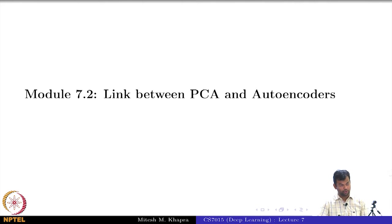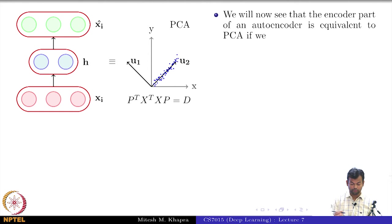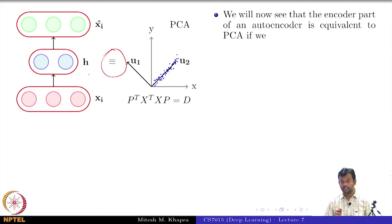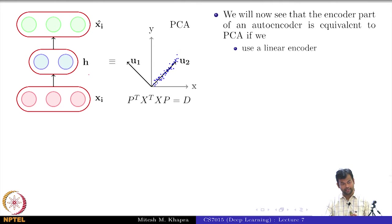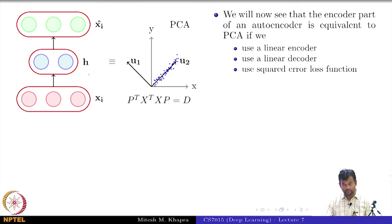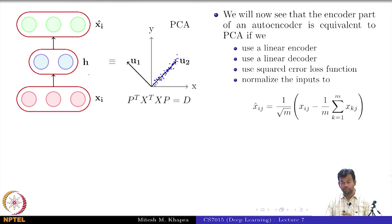We will move to the next module where I would like to show you a link between PCA and autoencoders. What I am trying to show is that under certain conditions an autoencoder is equivalent to PCA. The conditions are: if you use a linear encoder, if you use a linear decoder, if you use a squared error loss function, and if you normalize the inputs.